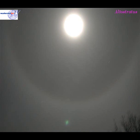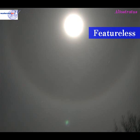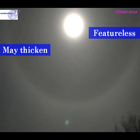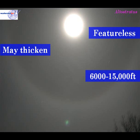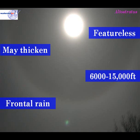Alto stratus cloud often occurs during a warm front. It forms after the cirrus cloud as the cloud gradually lowers. Generally alto stratus cloud is featureless. It may thicken up, particularly if it is associated with a warm front. Generally the cloud occurs between about 6 and 15,000 feet. If that cloud is thickening then it may bring some rain, especially if it is associated with a frontal system.